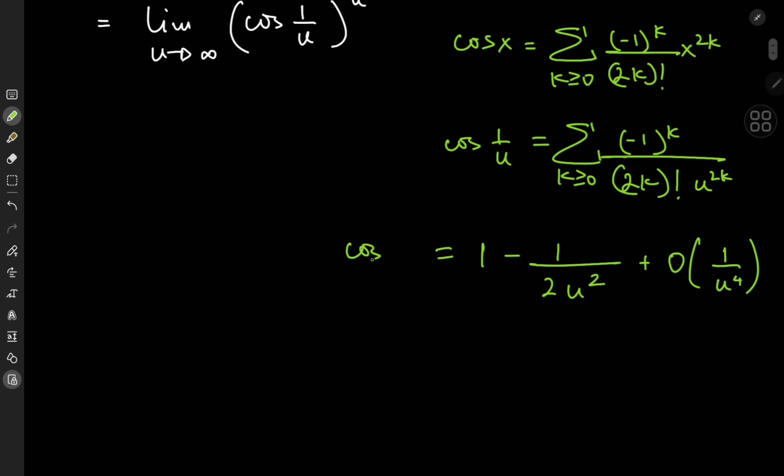So that means for large values of the u variable, we have cosine 1 by u asymptotically equal to 1 minus 1 by 2u squared. Now returning to my limit problem, this means I can write that my limit is equal to the limit as u tends to infinity of 1 minus 1 by 2u squared all to the u squared.